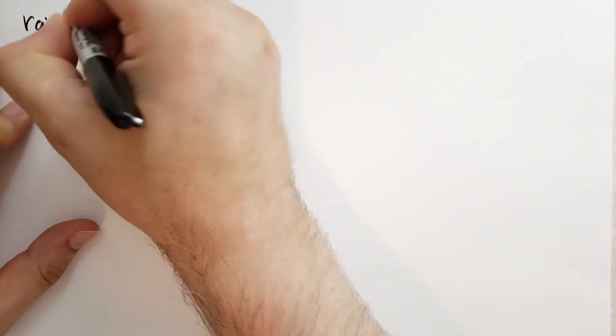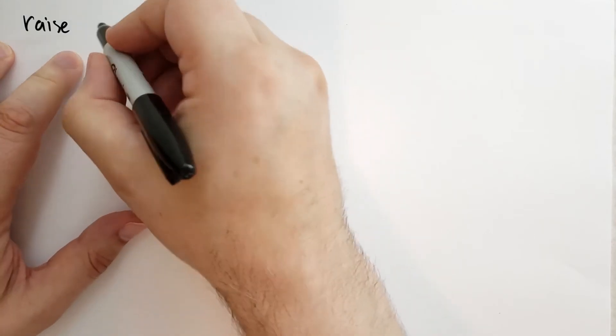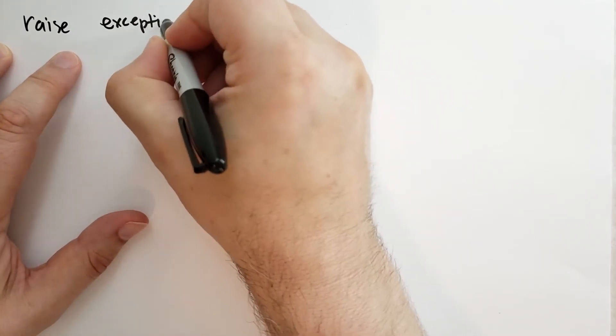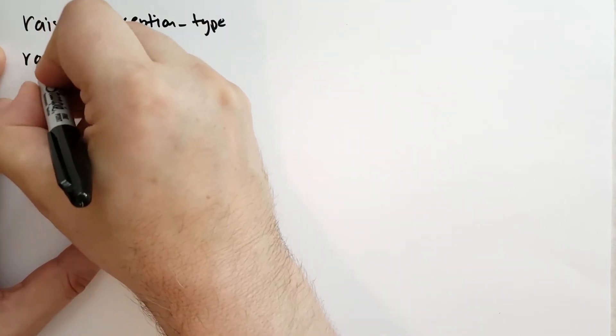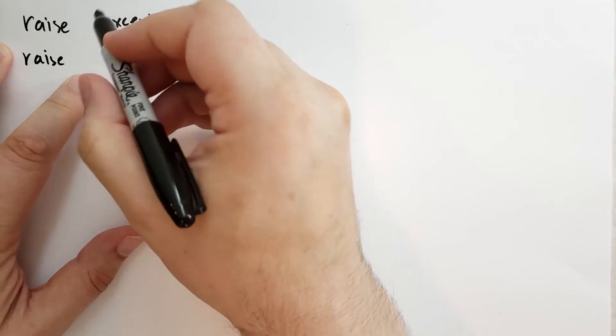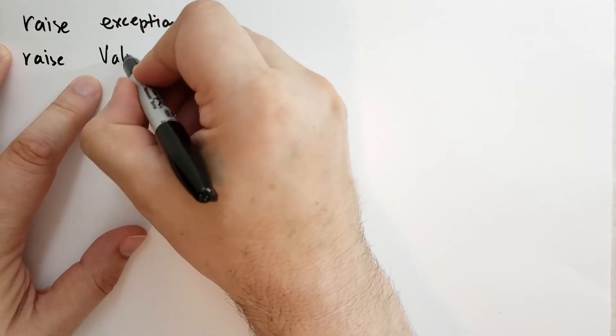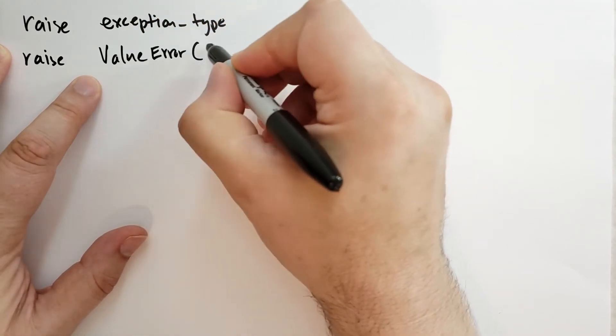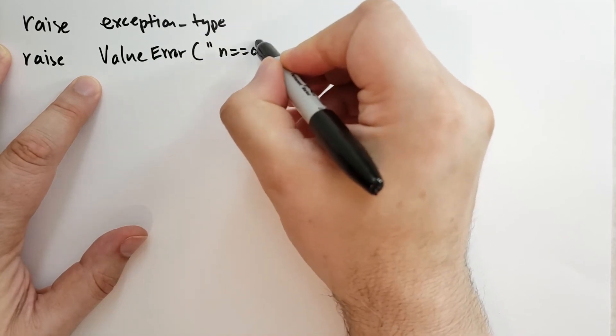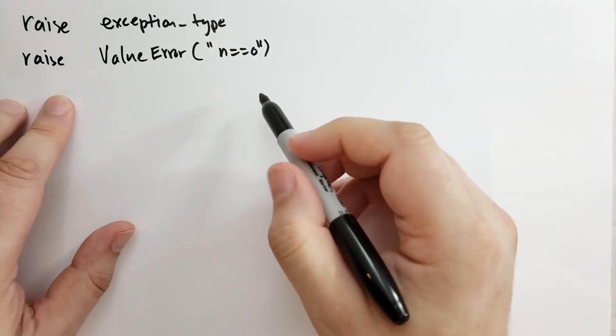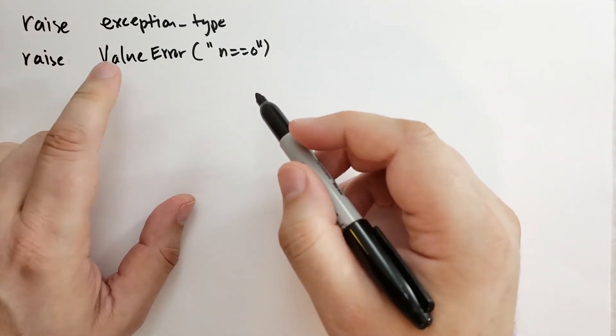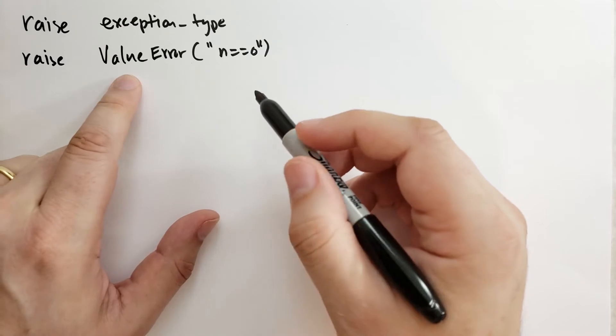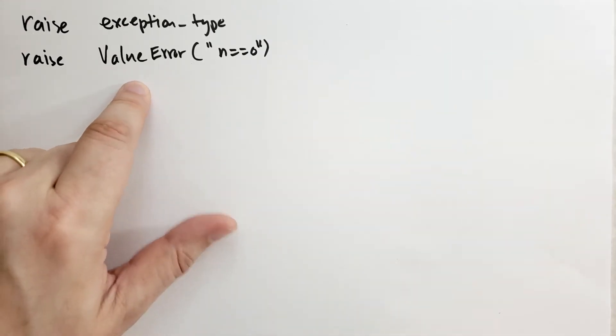The way we do that is we use the raise statement. The raise statement can take an exception type or it can take an expression that gives you an exception type. For instance, you might say value error and then say like n is equal to zero. If the value that you pass into the raise expression is not an exception, is not derived from the exception type, then Python won't like that. It'll tell you that that's the wrong type.